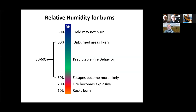Another extremely important factor in controlling how the fuel behaves and whether you can control the fire is relative humidity. We like to burn generally in a range of 30 to 60 percent relative humidity. Above about 60 percent, fire usually won't carry very well. Below 30 percent — certainly below 25 percent — things become really difficult to control; fires can become explosive. Even rocks might burn when you get down to really low relative humidity. One of the things that will stop us from doing a fire even when other conditions look great is when it's too dry.